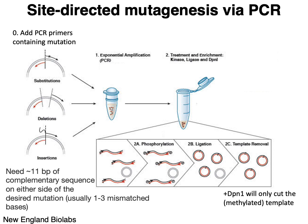Similarly, you can do an insertion by designing one of the primers such that part of the primer anneals to the starting position as it should, but there's an extra bit of sequence on the 5' end that initially doesn't anneal to the template. After a few rounds of PCR amplification, most of the amplicons will also have that extra piece of sequence that isn't initially complementary to anything on the template strand.